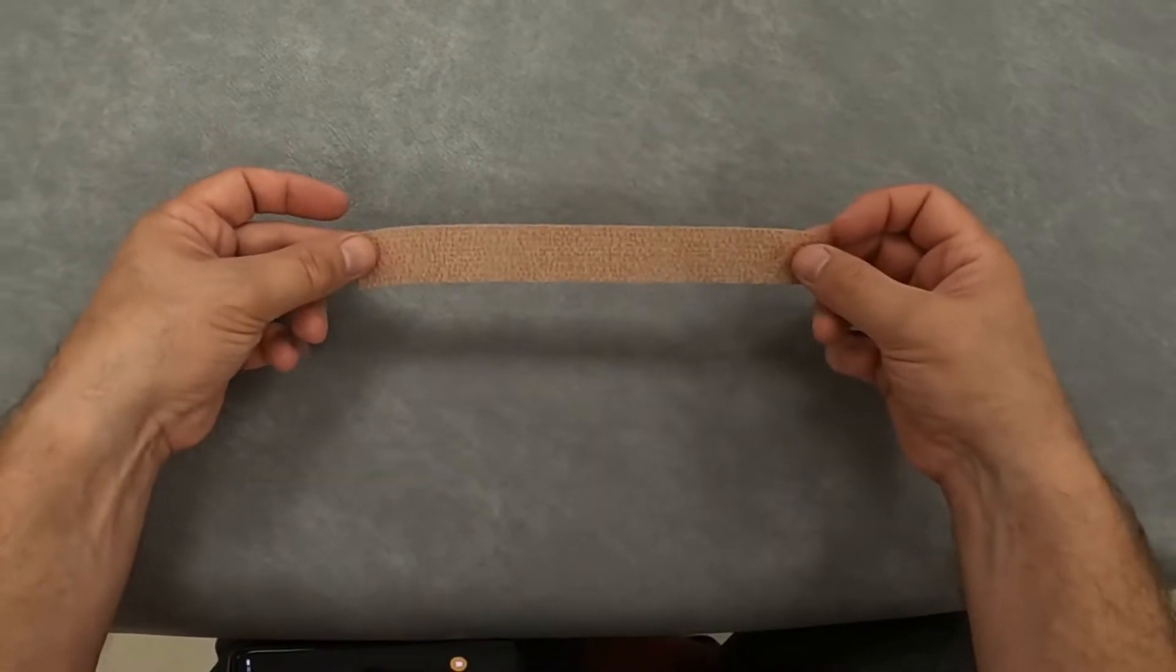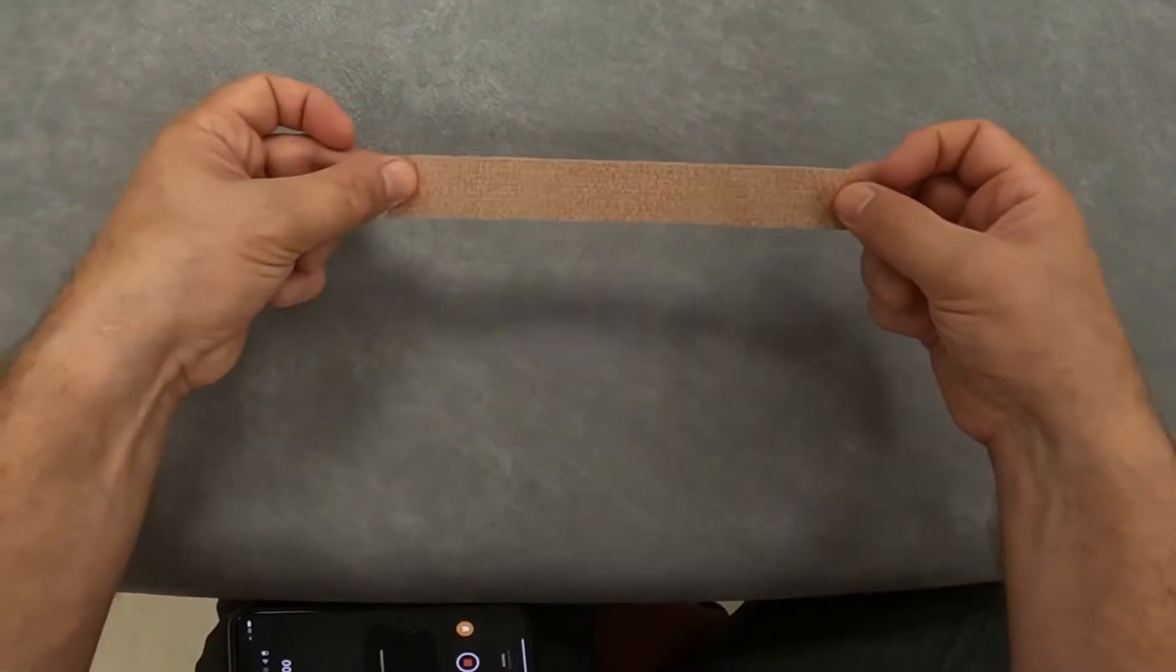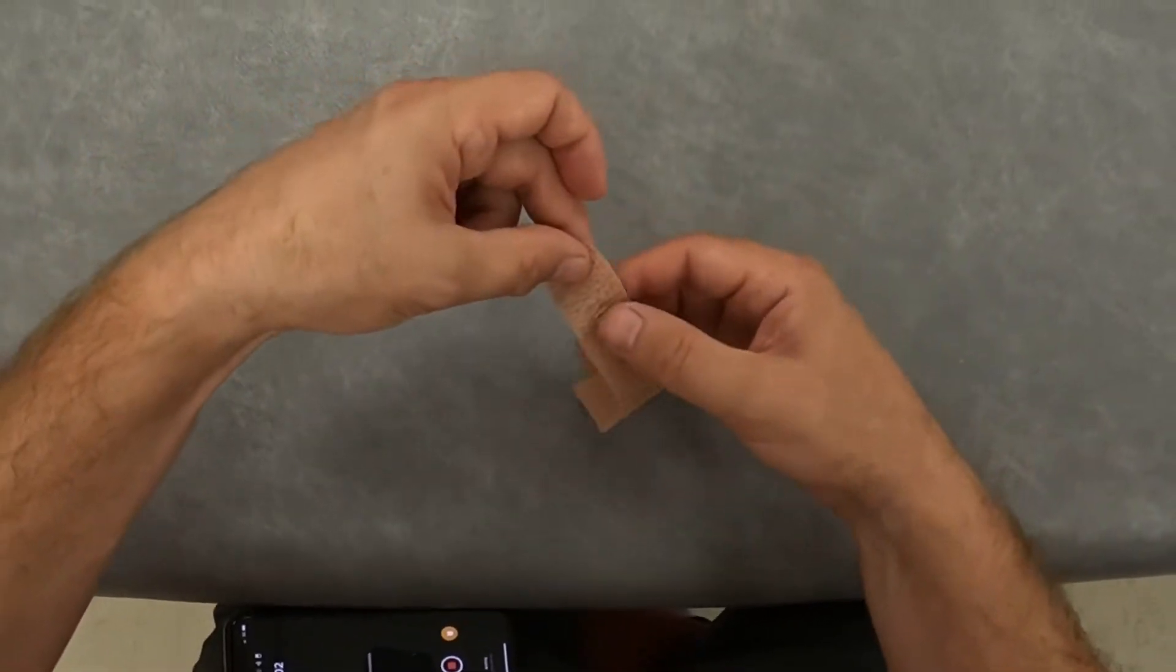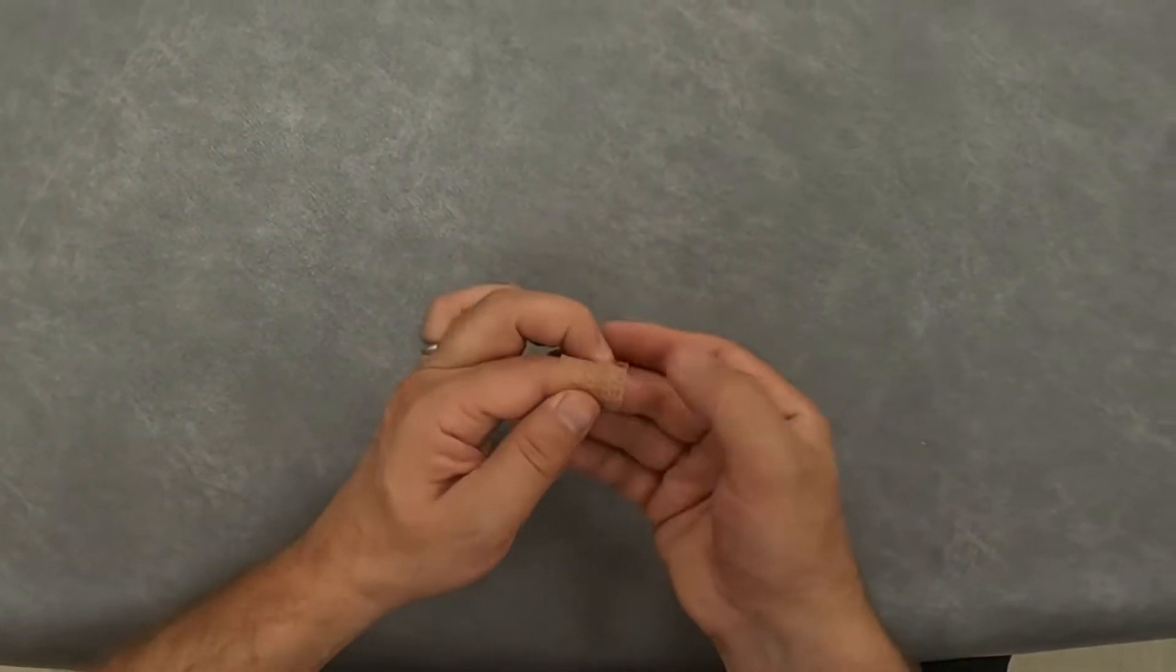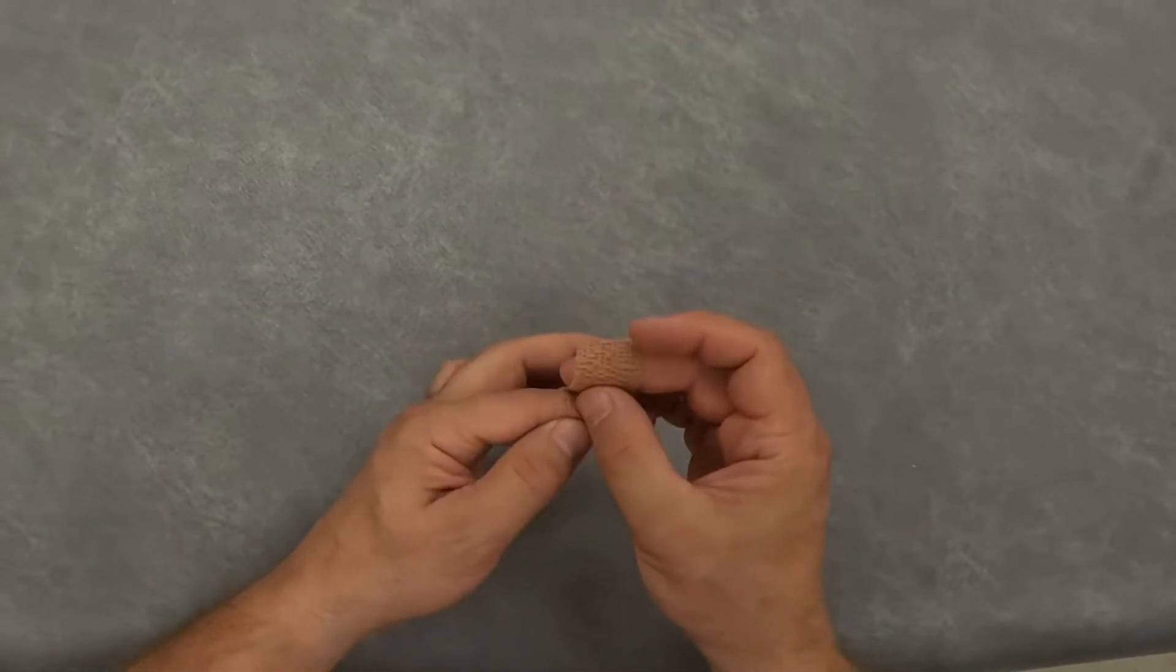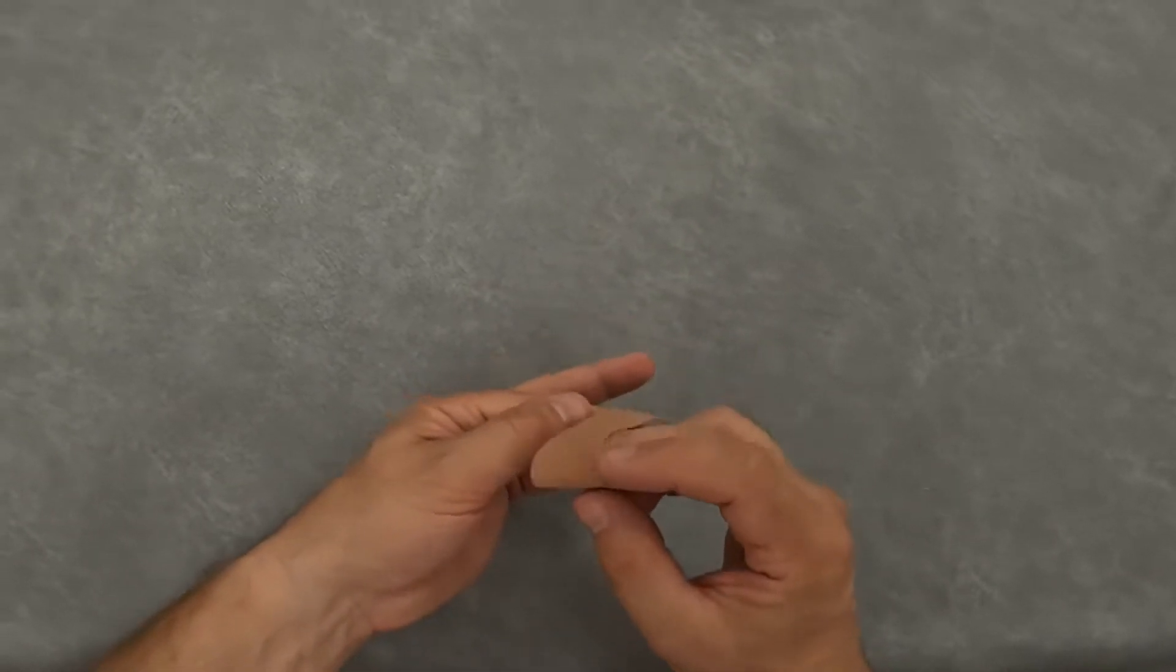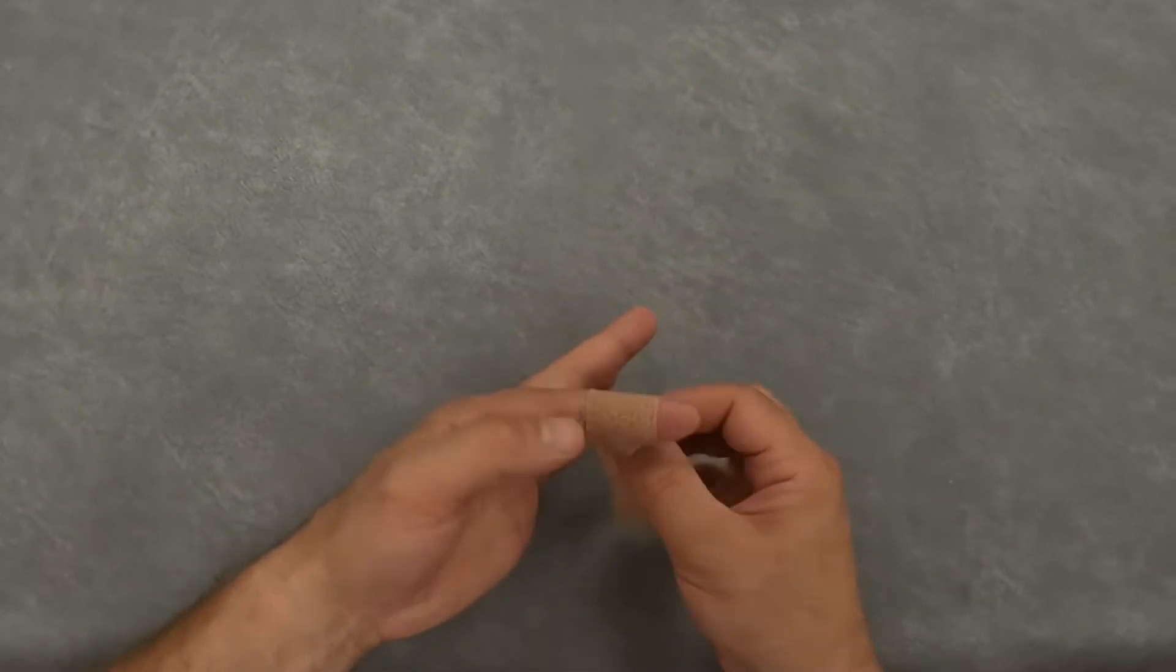Wrap it slowly around the affected joint, in this case a DIP finger joint. Put a bit of tension in with every wrap, not too tight though or you'll cut off the circulation. The end of the finger shouldn't change color or you've done it too tightly.